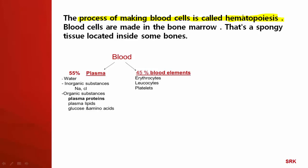Where are blood cells produced? The blood cells are made in the bone marrow. Bone marrow is the spongy tissue located inside some bones. From that bone marrow, the cells of the blood are produced, which is the process called hematopoiesis — also referred to as hemopoiesis; both terms are the same.